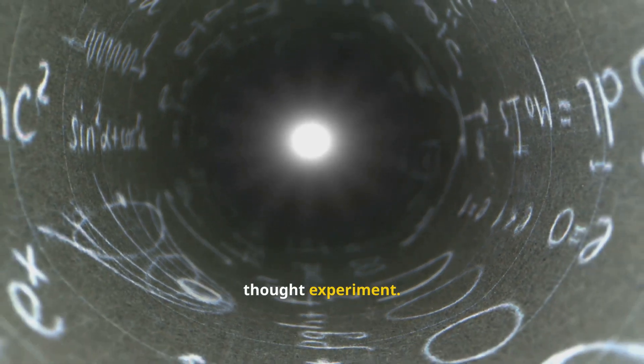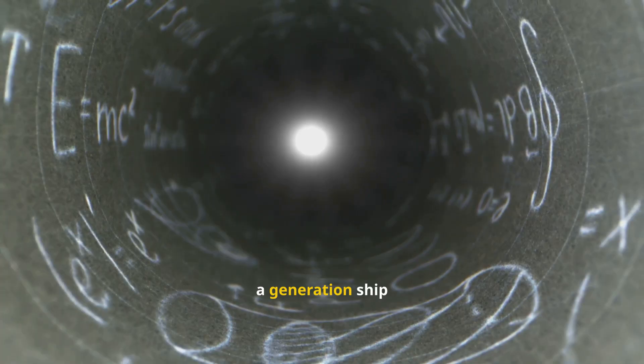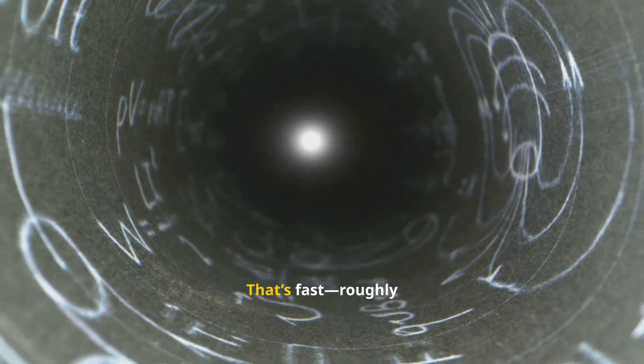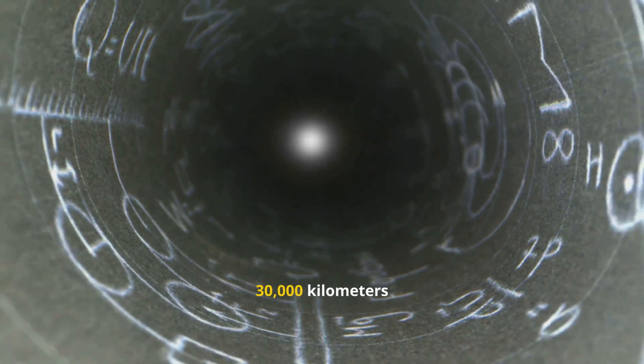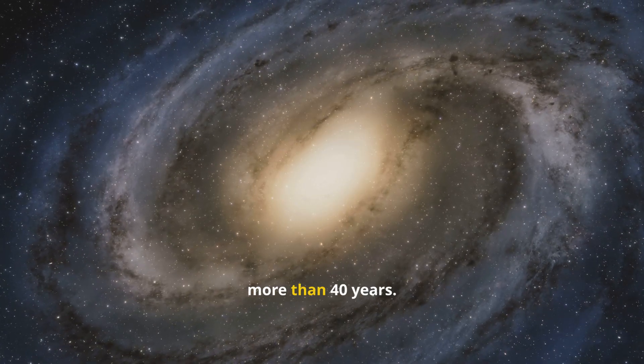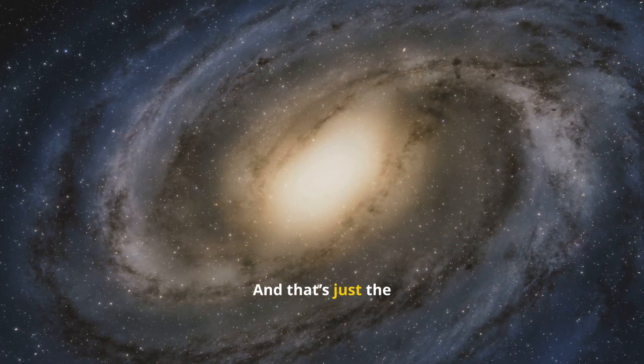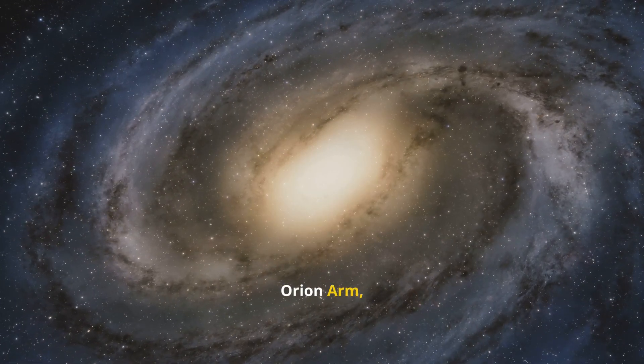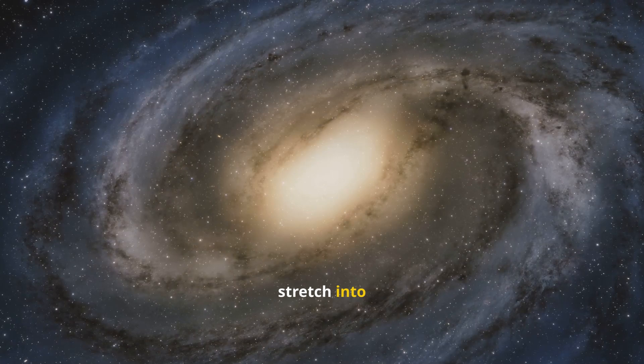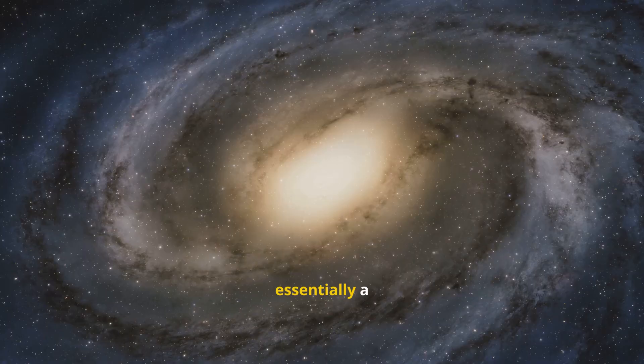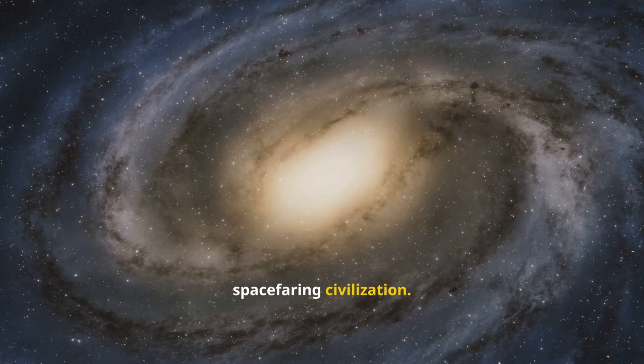But here's a thought experiment. Let's say we built a generation ship capable of traveling at 10% the speed of light. That's fast, roughly 30,000 kilometers per second. Even then, the trip to Proxima Centauri would take more than 40 years. And that's just the closest star. If we wanted to reach stars in the Orion Arm, the timelines stretch into thousands of years. A ship like this might house tens of thousands of people, essentially a space-faring civilization.